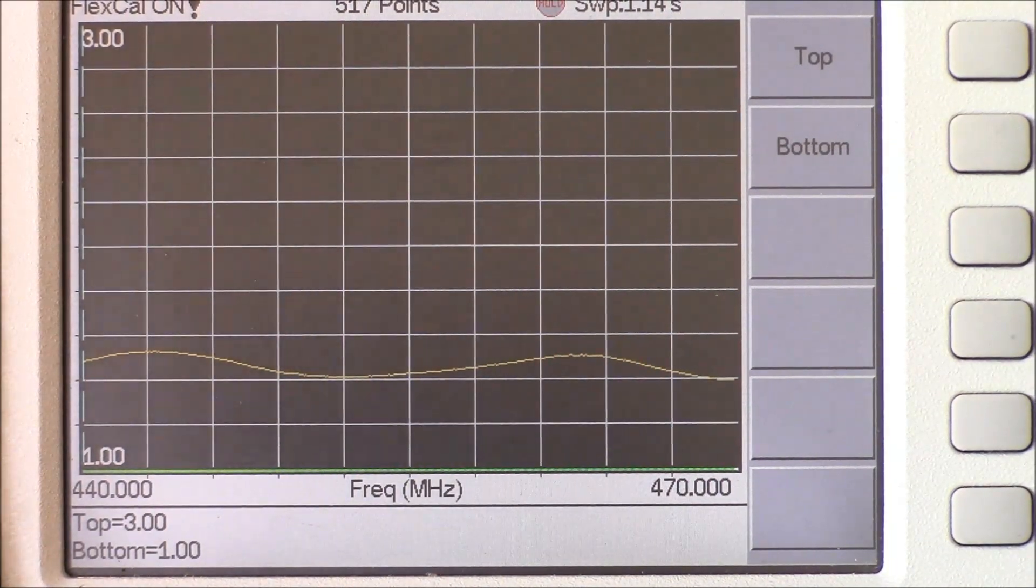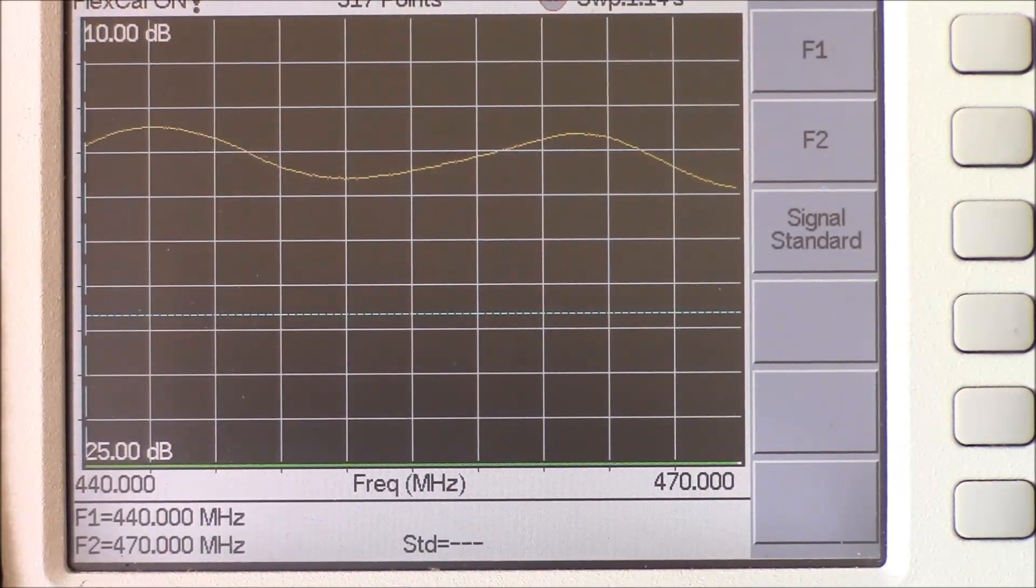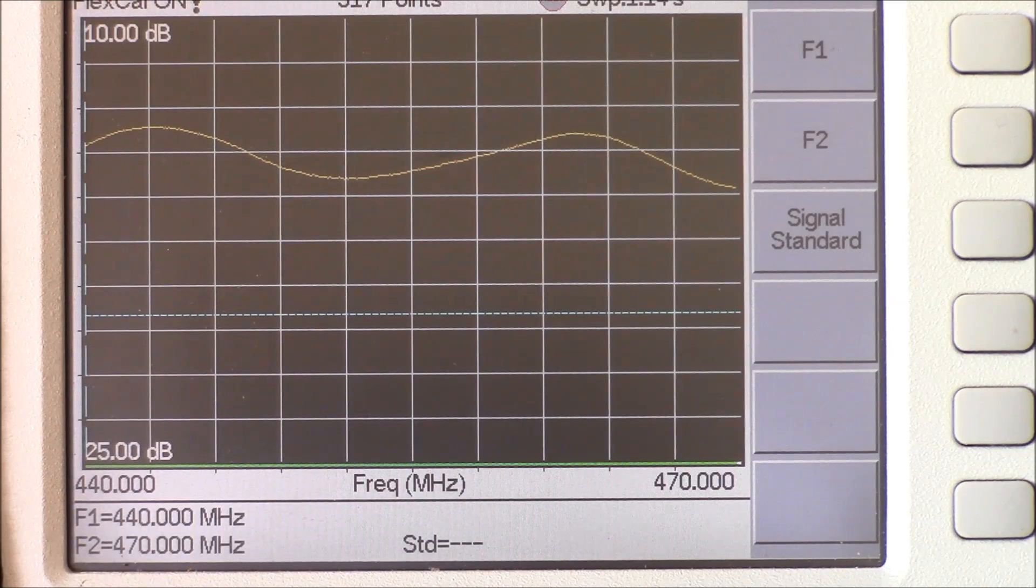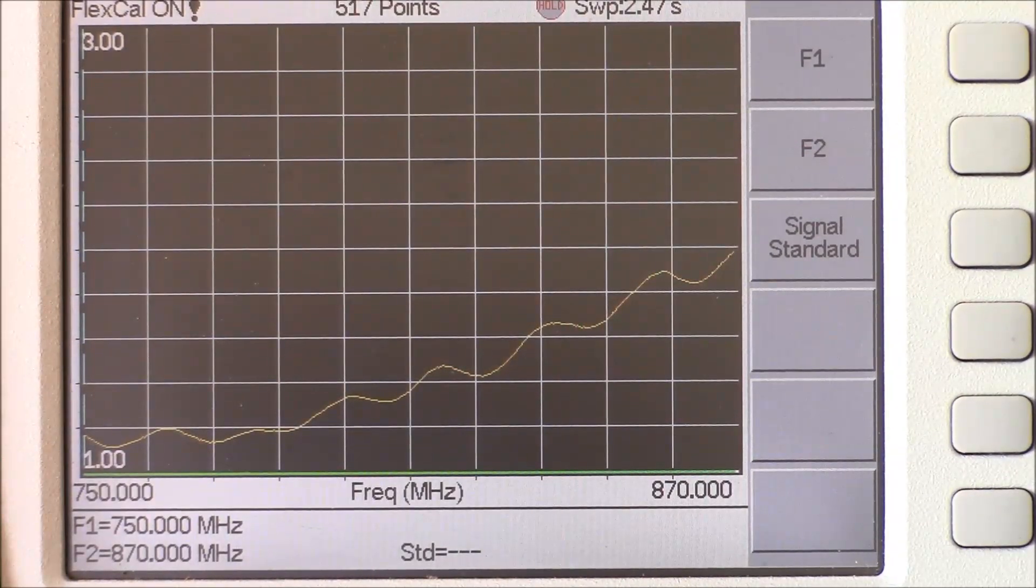Here are the results at UHF with the Motorola multiband antenna. This is the return loss of our Motorola multiband antenna at UHF frequencies. Here is the 700-800 MHz performance of our Motorola multiband antenna. This is the return loss at 700-800 MHz of our Motorola multiband antenna.